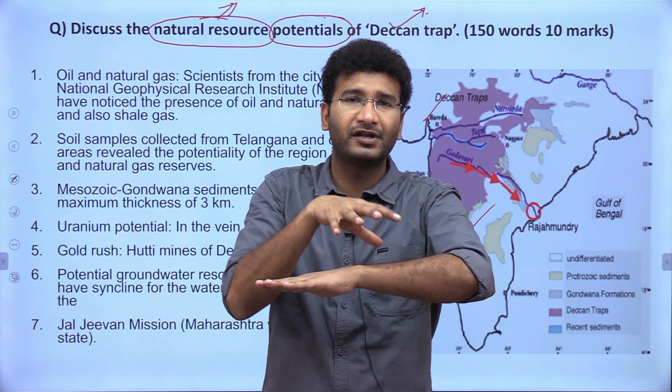The next question: 'Examine the potential of wind energy in India and explain the reasons for their limited spatial spread.' There are two directives — examine and explain. Spatial spread means you need to explain geographically where the potential for wind energy exists and where it does not. Since there are two different directives, you must address both in the same answer.